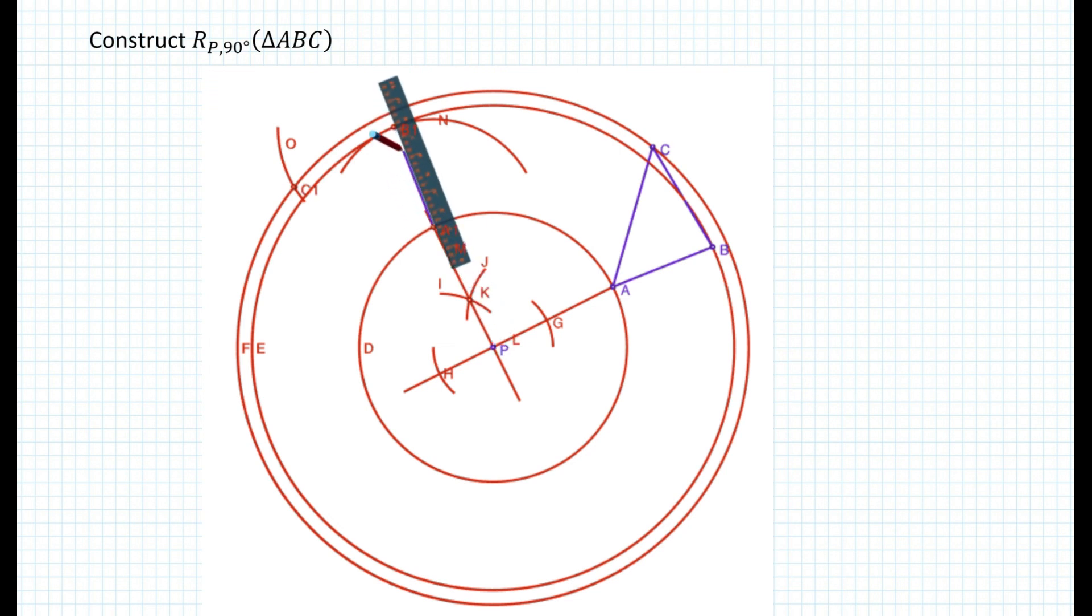Now we basically have all the three points rotated by 90 degrees. So all we need to do is connect them to have our triangle that is rotated by 90 degrees counterclockwise.